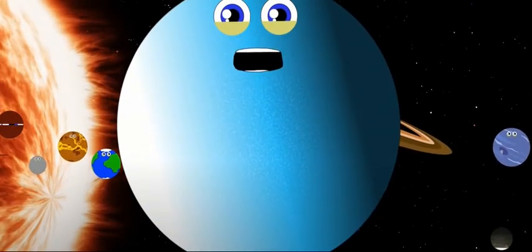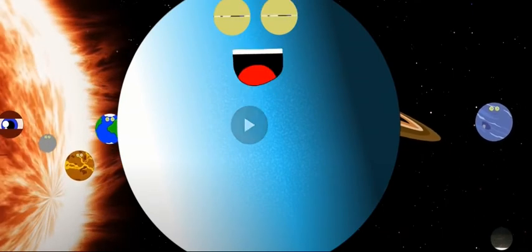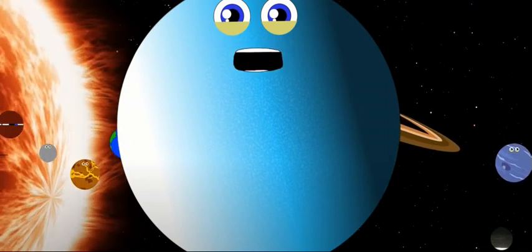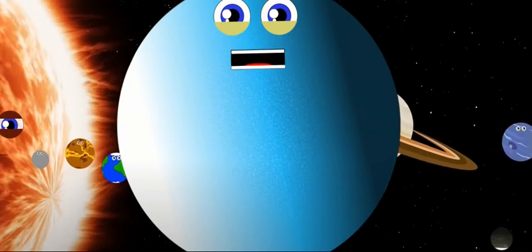Number seven, I'm Uranus, my rings go up and down. That's because I'm spinning on my side, I'm the coolest planet around.